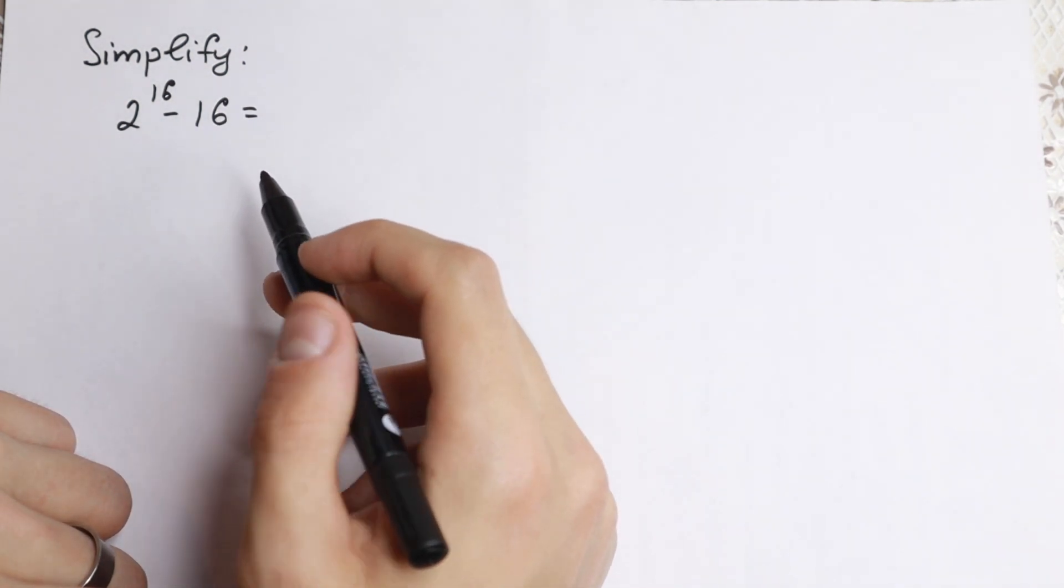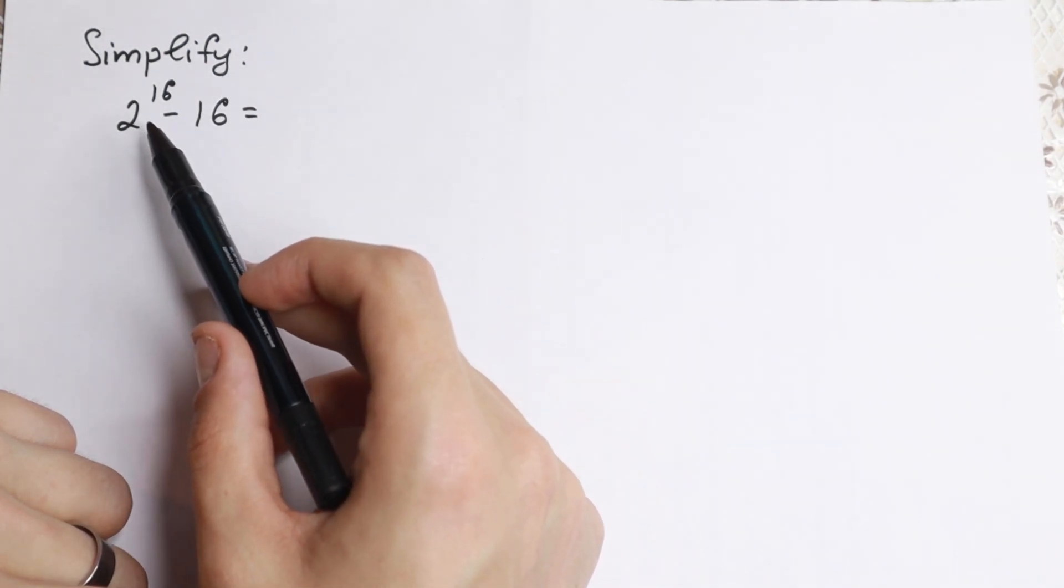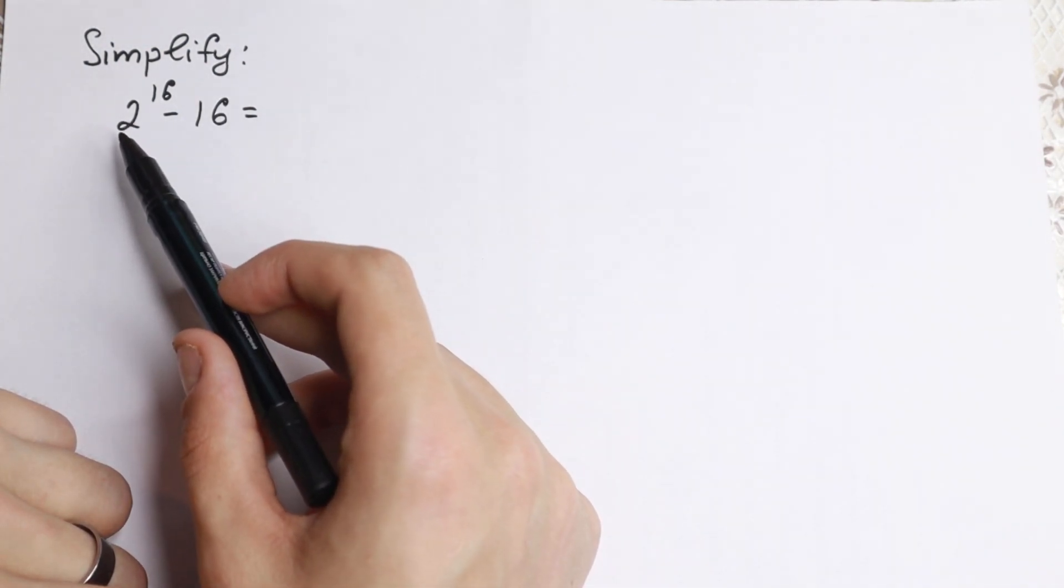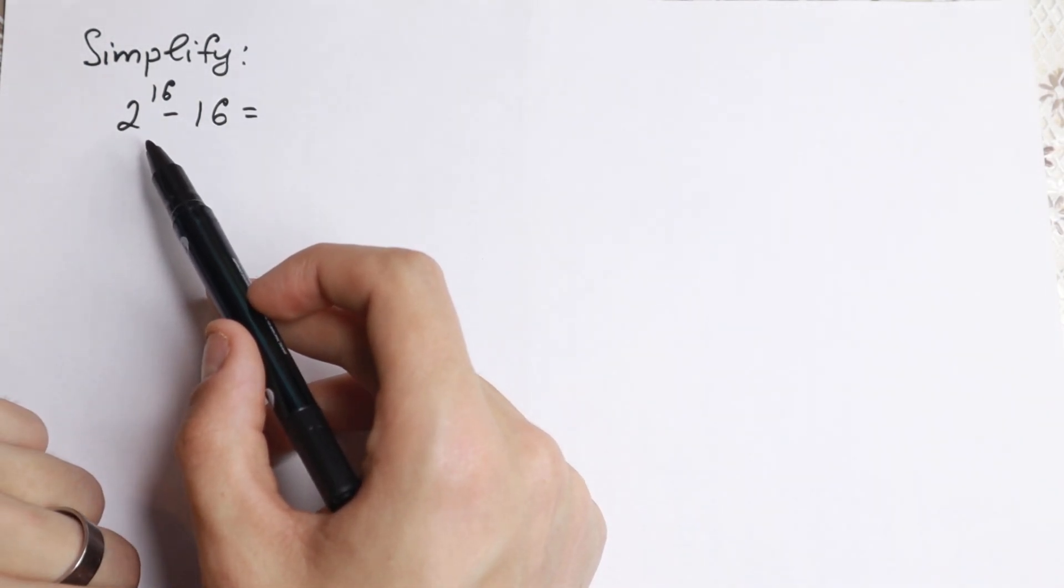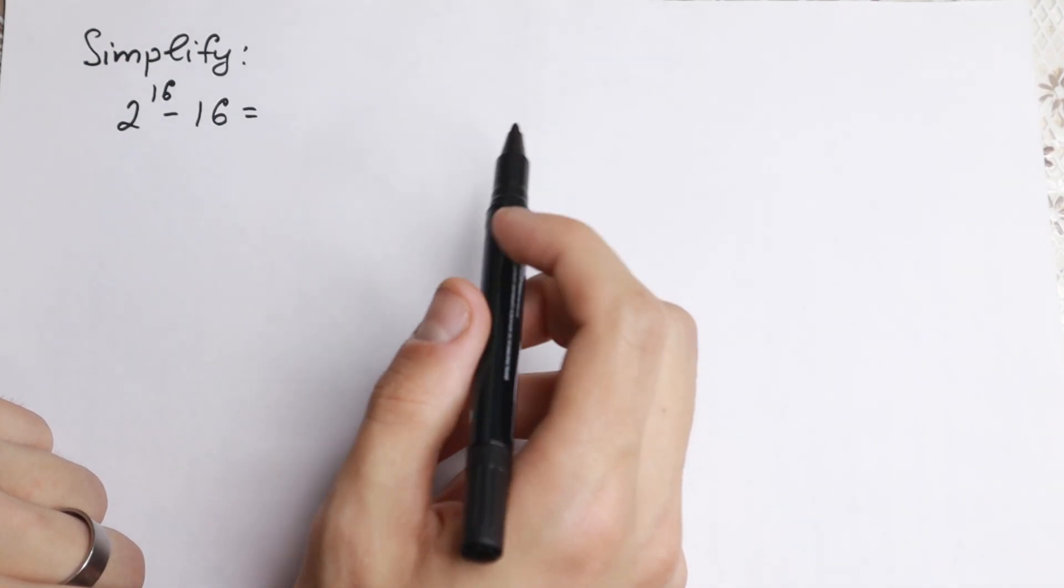Okay, how can we work with this? Well, the first thing, this problem is really hard because we have 2 to the 16th power, not like a cube, not like a fourth power which we know exactly the value of, but we have 2 to the 16th power. How can we work with this?